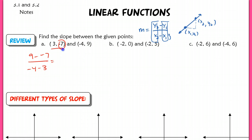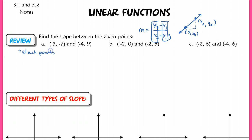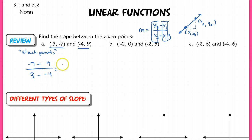I like to teach this a little differently because there's a way to make sure you never write this the wrong way. What you're going to do is stack the points. Take one point, put the y on top and the x underneath, then take the other point, put the y on top and x underneath, and just subtract in between. This makes sure you'll never get the problem wrong. The numerator becomes negative 16, the denominator is 7, so my slope is negative 16 sevenths.